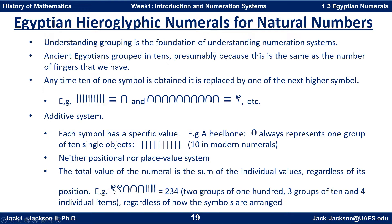Here's an example. Two scrolls, three heel bones, and four staffs would be four units, three tens, and two hundreds, or 234. Two groups of one hundred, three groups of ten, and four individual items, regardless of how the symbols are arranged.